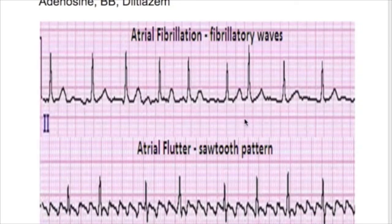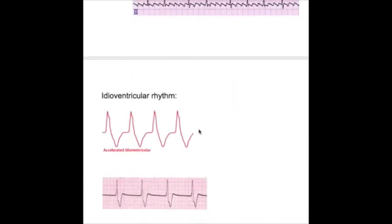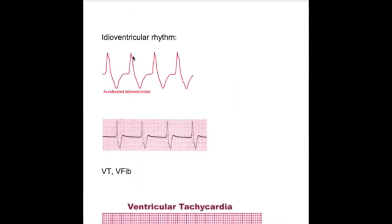Idioventricular rhythm: bizarre QRS complexes, P wave is buried but cannot be seen. What's idioventricular rhythm? When both SA node and AV node are knocked down for any reason, ventricles beat on their own.